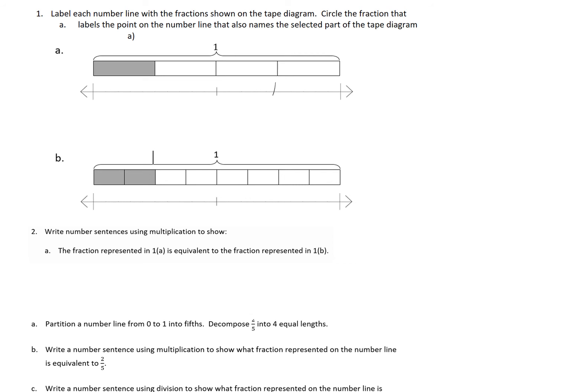Today we're going to be talking about how to use a number line to help us find equivalent fractions. This goes along with the lesson 11 homework in module 5. Number 1 says label each number line with the fraction shown on the tape diagram. Circle the fraction that labels the point on the number line that also names the selected part of the diagram.